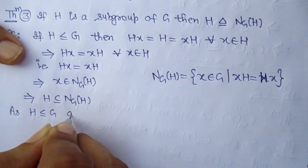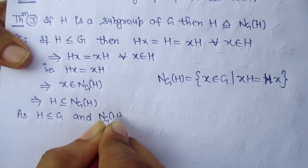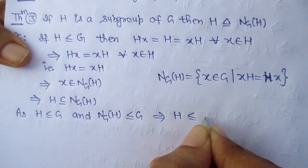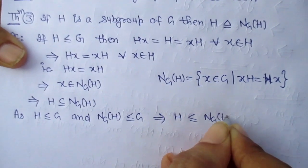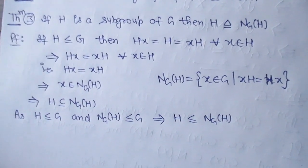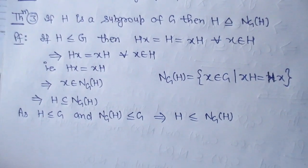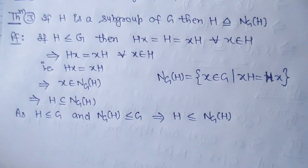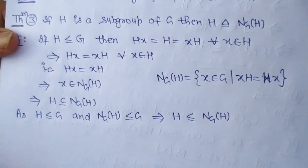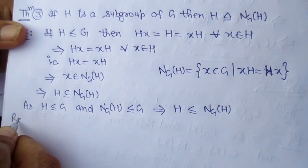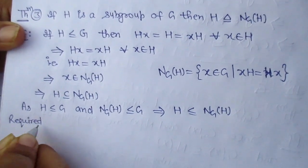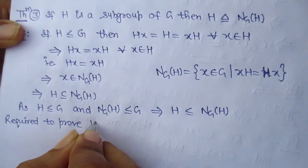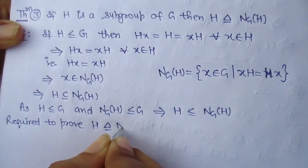As H is a subgroup of G, N_G(H) is a subgroup of G. Therefore N_G(H) is a subgroup of N_G(H).